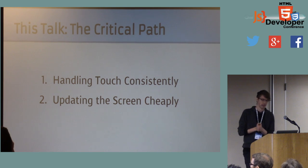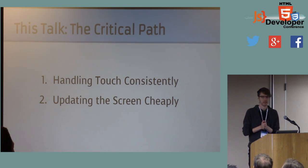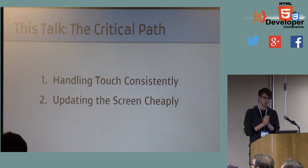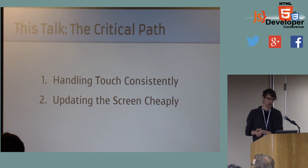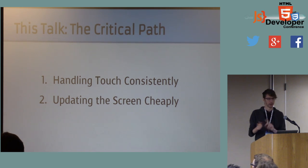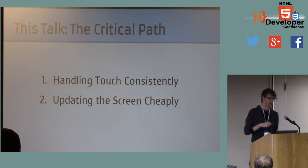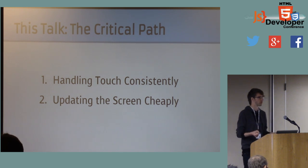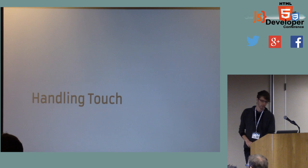This talk is really about that critical path — all the stuff that needs to happen between when you move your finger on the screen and when new pixels appear. I'm going to do this in two parts: one about how to handle touch events consistently and effectively, and the other about how to actually produce those new pixels as cheaply as possible.